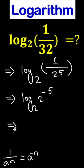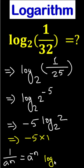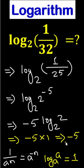Now, this can be written as minus 5 times log base 2 of 2. And since log base a of a equals 1, this gives us minus 5 times 1. So our answer is minus 5. Thank you.